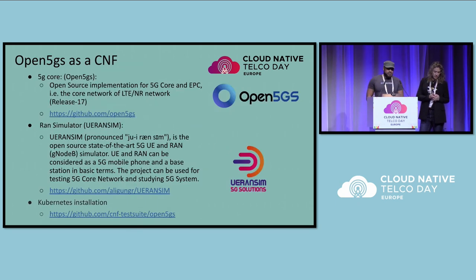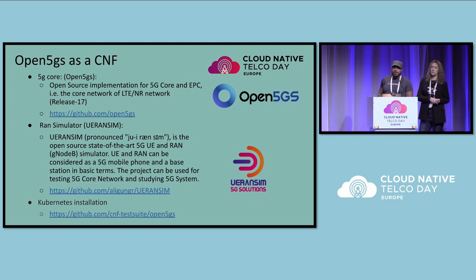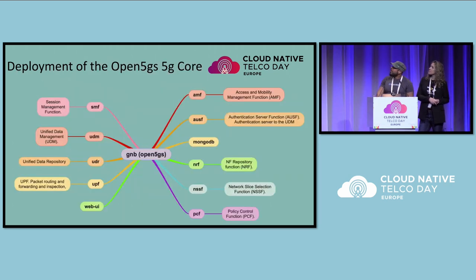For the example CNF, we used Open5GS as a 5G core and UE RAN sim to send traffic to the 5G core. We open sourced the configuration for the Helm charts and created a GitHub Actions script. If you want to see how to test a simple 5G core within GitHub Actions, spinning up a kind cluster, it's all in one place at the link at the bottom. The containers and pods are all inside of the Kubernetes cluster.